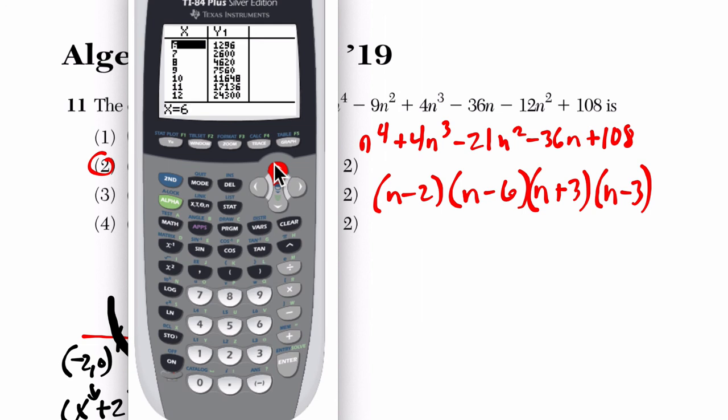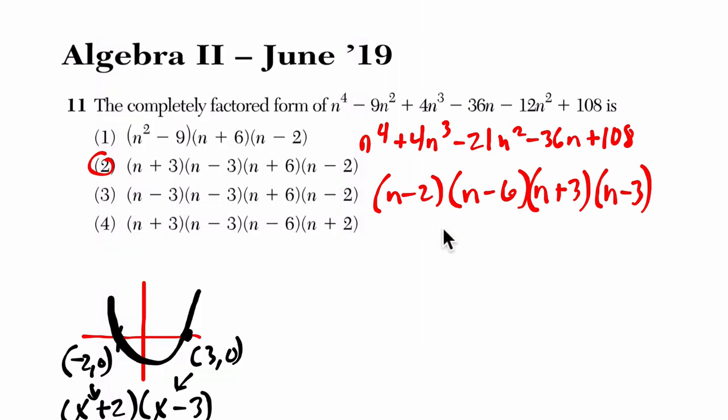Okay. So 6 is not a 0. If 6 was a 0, the factor would be n minus 6. I apologize. So here, if I go back. Look at this. I do that. So if negative 6 is a 0, n plus 6 is the factor. And that's choice 2.